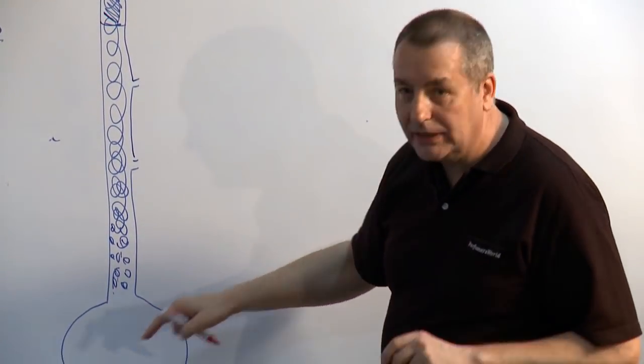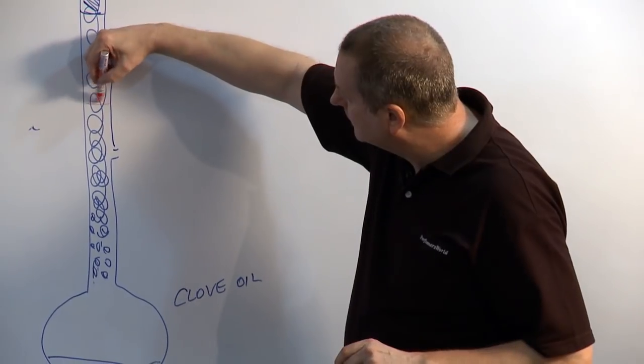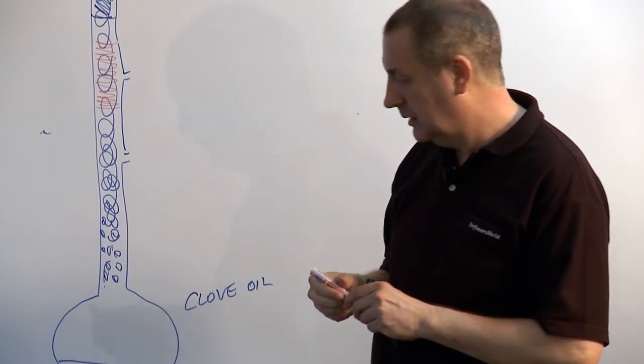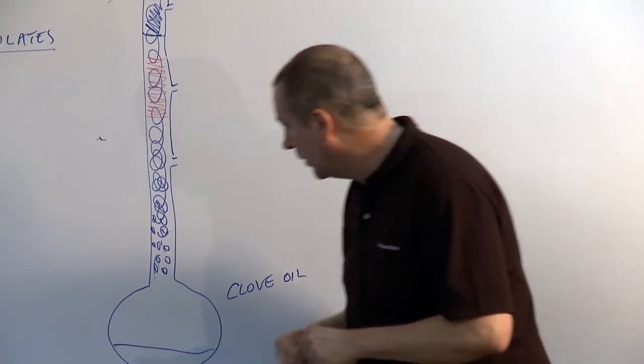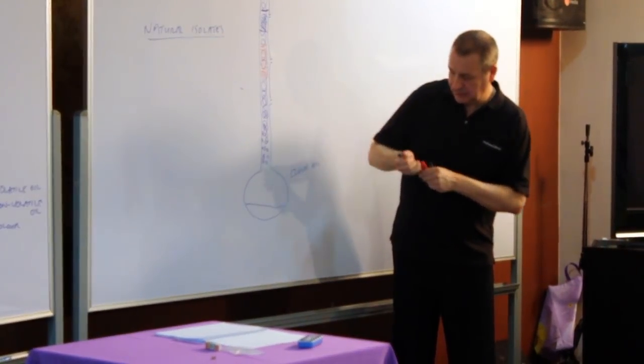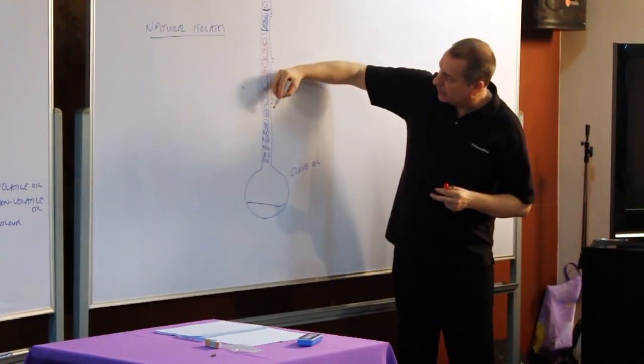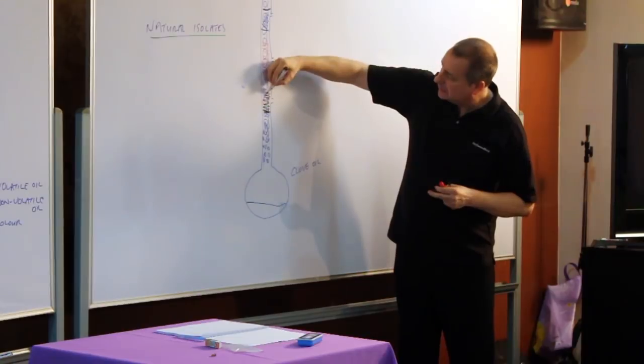Then the medium sized molecules will fall into bands there. And then the heavy molecules, the bigger molecules, the sesquiterpenes, will fall into bands there.